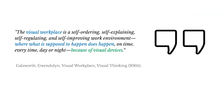Here's a great quote about the visual workplace: 'The visual workplace is a self-ordering, self-explaining, self-regulating, and self-improving work environment where what is supposed to happen does happen — on time, every day, day or night — because of visual devices.' So does the process just work because we have these visual cues and indicators to see what's happening, to know we have an issue, or to know where there's waste that needs to be addressed? These visual cues help us understand and improve the process.